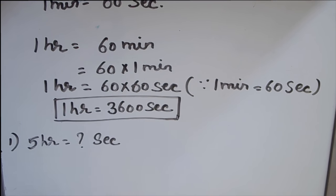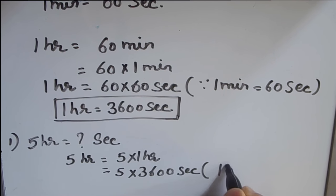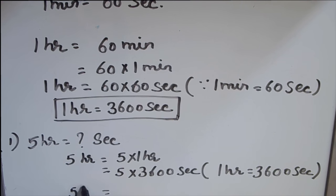So what we'll do: five hours, we can write as five times one hour. And in place of this one hour, we are going to write 3600 seconds, because one hour is 3600 seconds. And now we are going to multiply the two numbers.